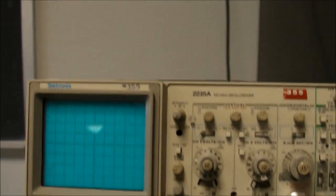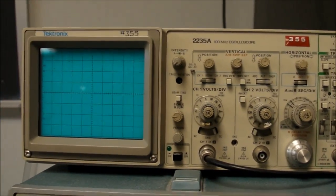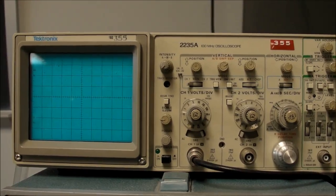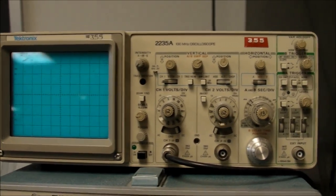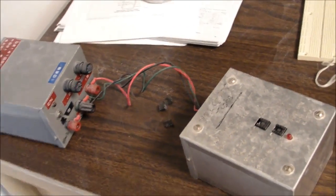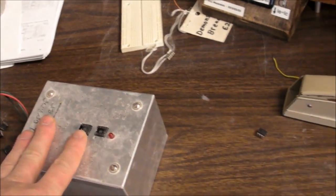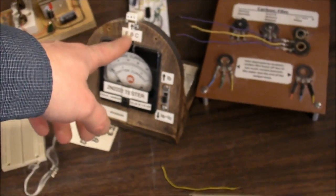And we got curve tracer right here. Tektronix 576 curve tracer. And I put another scope on top of it just to look at the steps being applied to the base or the gate of transistor whatever is getting hooked up down here.